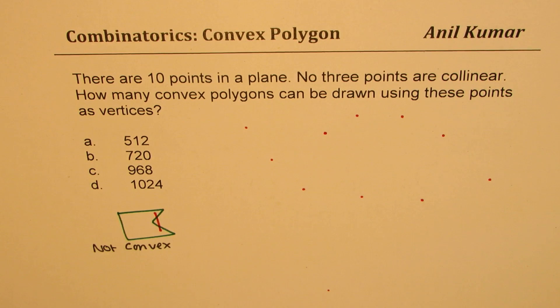So how many convex polygons can you draw given 10 points so that no three of them are collinear? Okay, so I hope you got your answers.